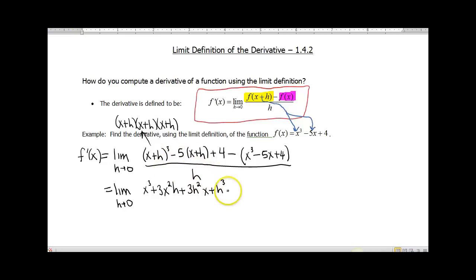Next thing we need to do is distribute our -5 through. So that'll be -5x - 5h + 4.